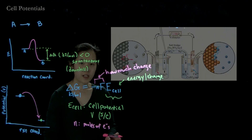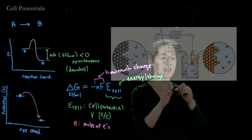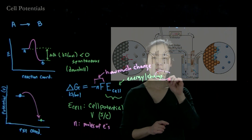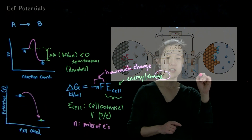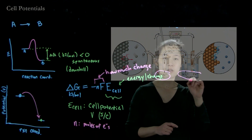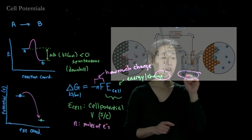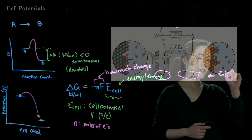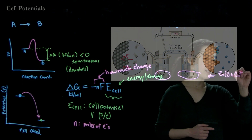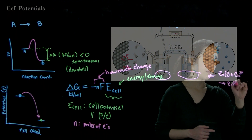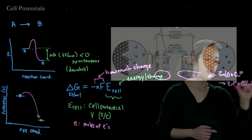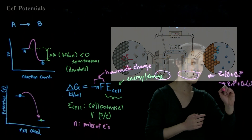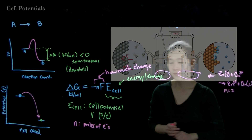Going back to the zinc-copper cell, we have zinc metal going to zinc 2+, and copper 2+ going to copper metal. Our balanced reaction is: zinc solid plus copper 2+ going to zinc 2+ plus copper metal. Here we're passing two electrons per mole of reaction, so in this case n equals 2.